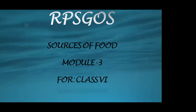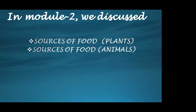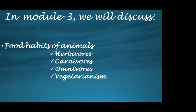Good morning students. Welcome to RPS Grip of School online classes for the subject science. Today we will discuss module 3, which is a continued part of the chapter Sources of Food. In this module we will discuss the various food habits of different animals and accordingly their categorization as herbivores, carnivores, and omnivores. We will also discuss a term called vegetarianism.